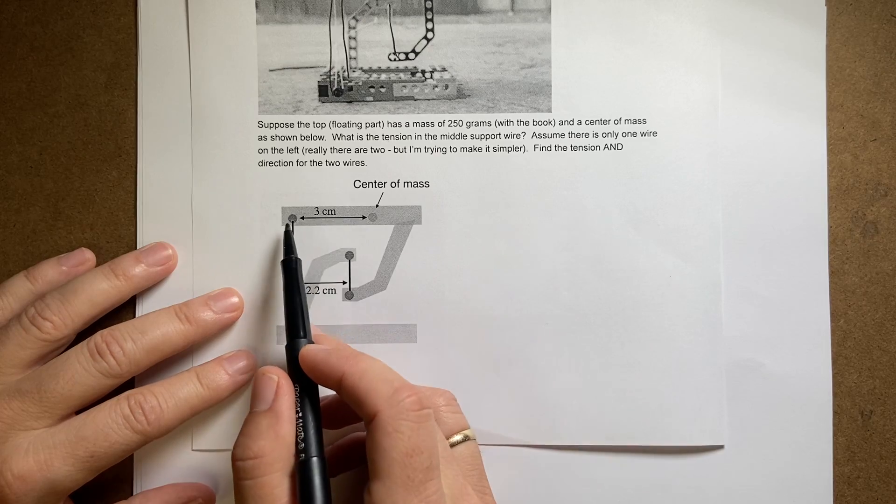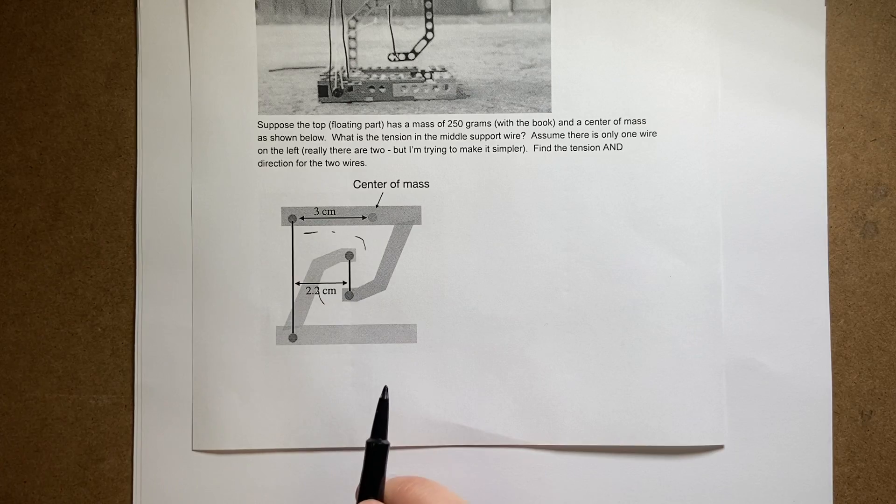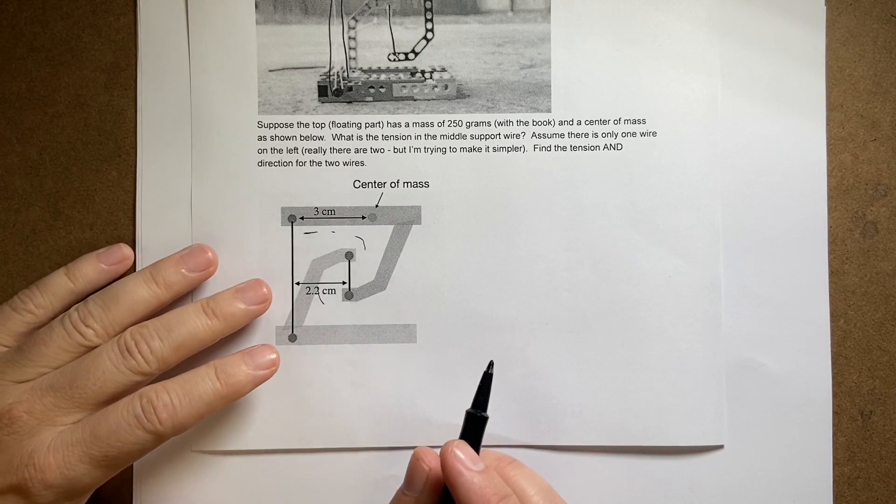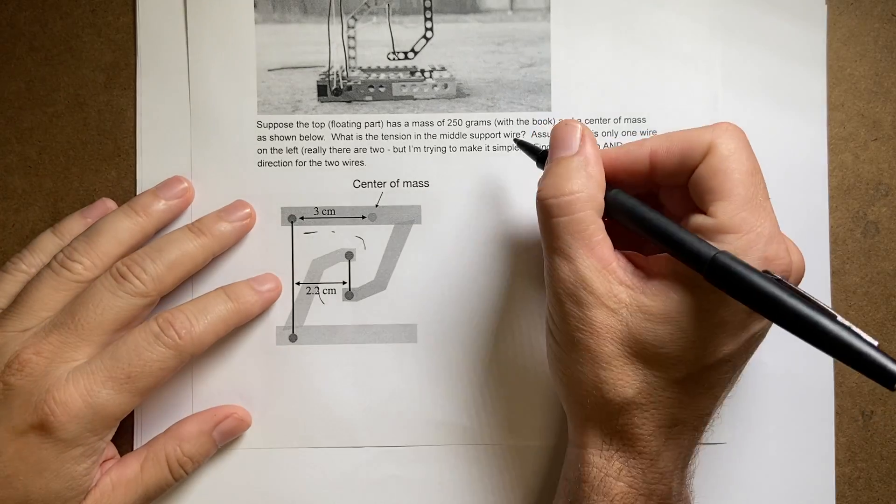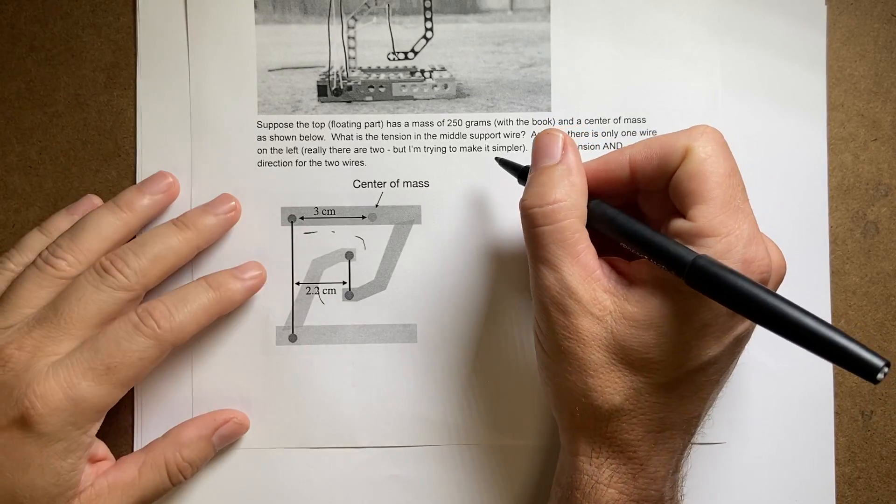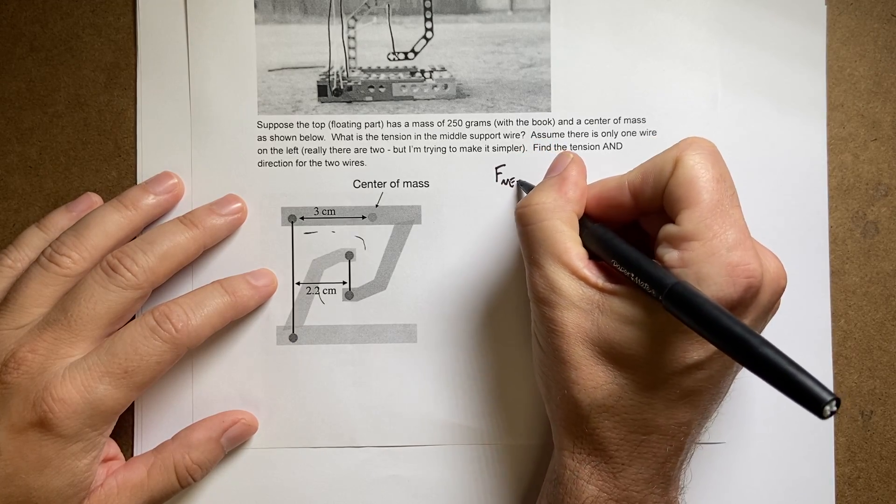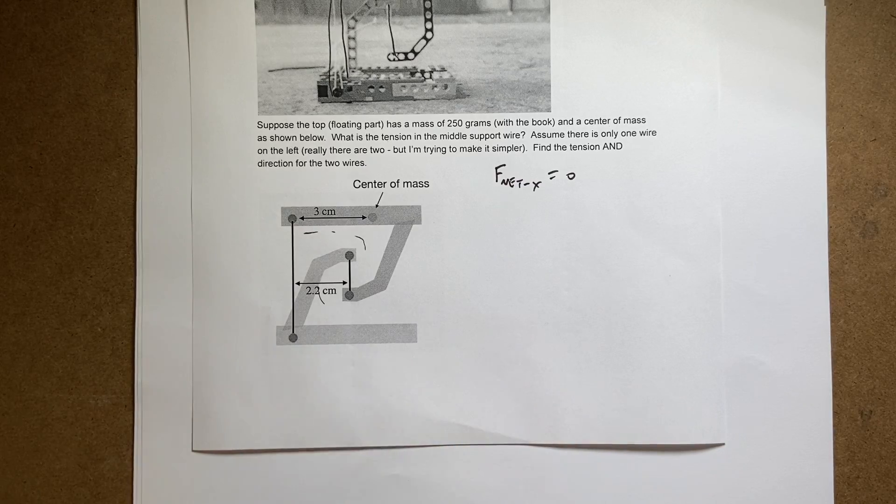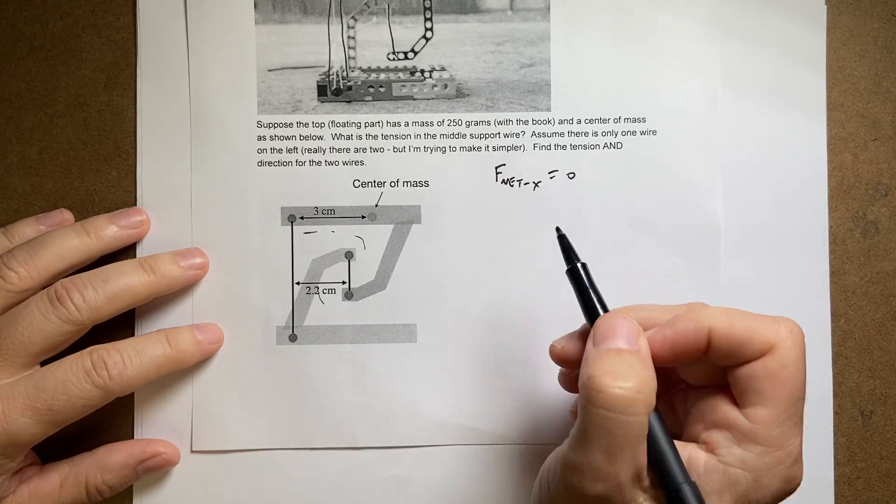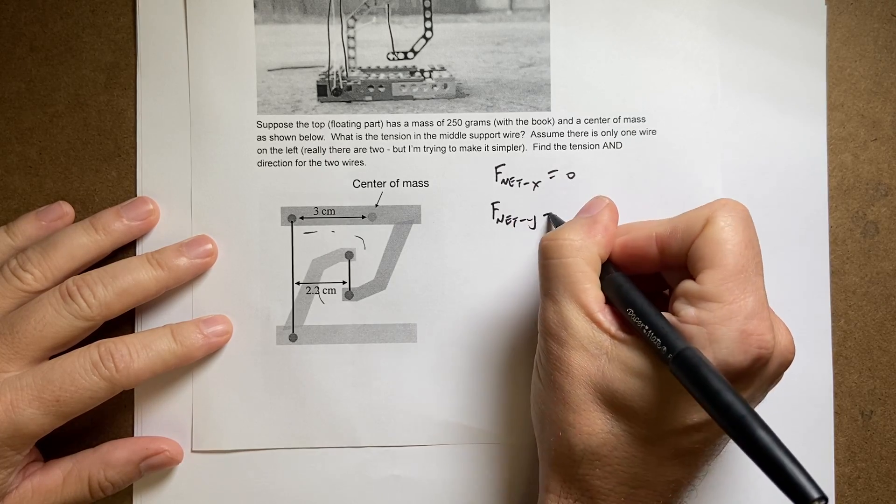This piece up here is in equilibrium. So if it's in equilibrium, then there's two things that are true. I could say the net force in the x direction is equal to zero because if it's in equilibrium, then it's not accelerating in the x direction. Same thing is true for the y direction. F net in the y direction is zero.